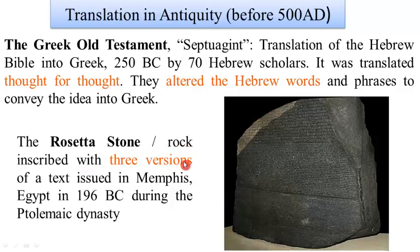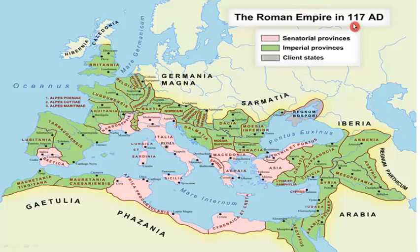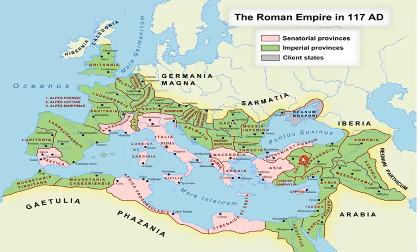Three versions of texts are inscribed in the Rosetta Stone, which was found in Egypt and dates back to 196 before Christ. This is a map of the Roman Empire dating back to 117 after Christ. All these areas were governed by the Roman Empire, issuing a civilization where translation also developed greatly and flourished.